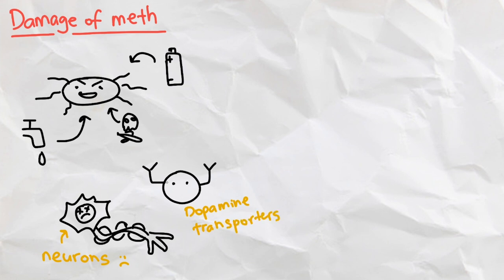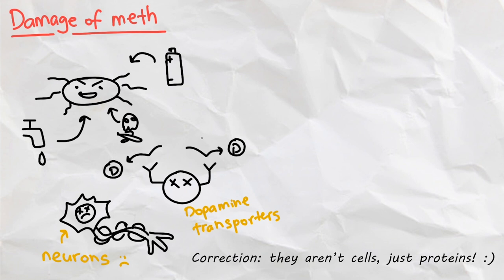So, as meth kills off those transporter cells, more subsequent meth is needed to reach the same high since more of the dopamine stays out of the body.